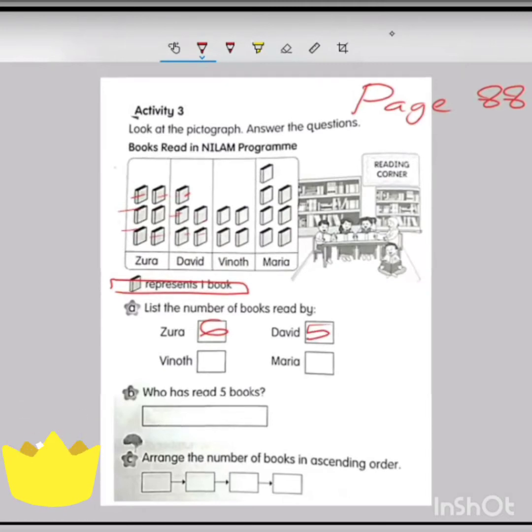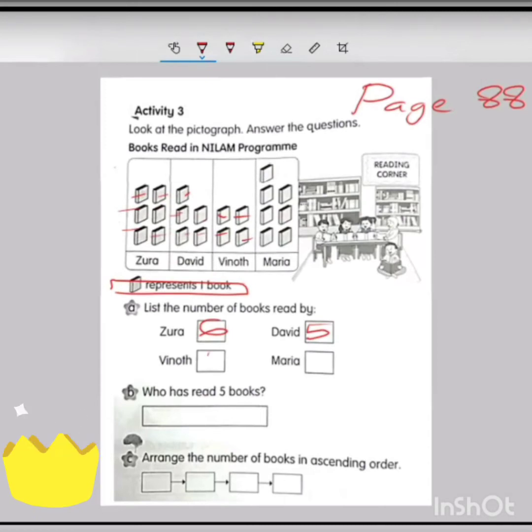How about Vinod? How many books that Vinod read? We need to count here. One, two, three, four. So Vinod read four books. And last one, Maria. Count the number for Maria. One, two, three, four, five, six, seven. Seven. Done.